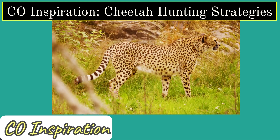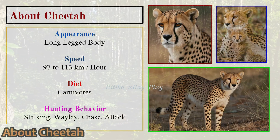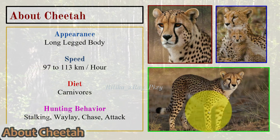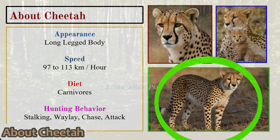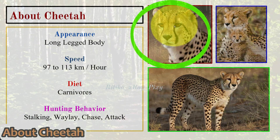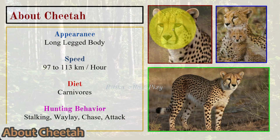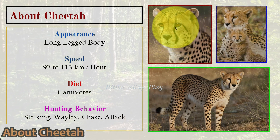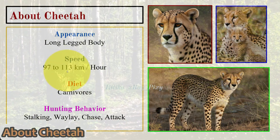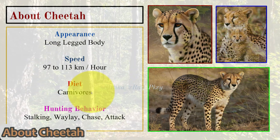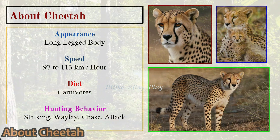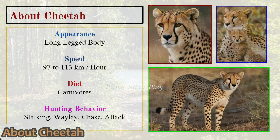About cheetahs: they are one of the fastest land animals. You can see in the image that their body has different spots — a yellowish tan coat with black spots which help them blend into the environment. On their face you can see distinctive tear marks running from the inner corner of the eyes down to the side of their mouth. Their speed is 97 to 113 kilometers per hour, and they are carnivores.